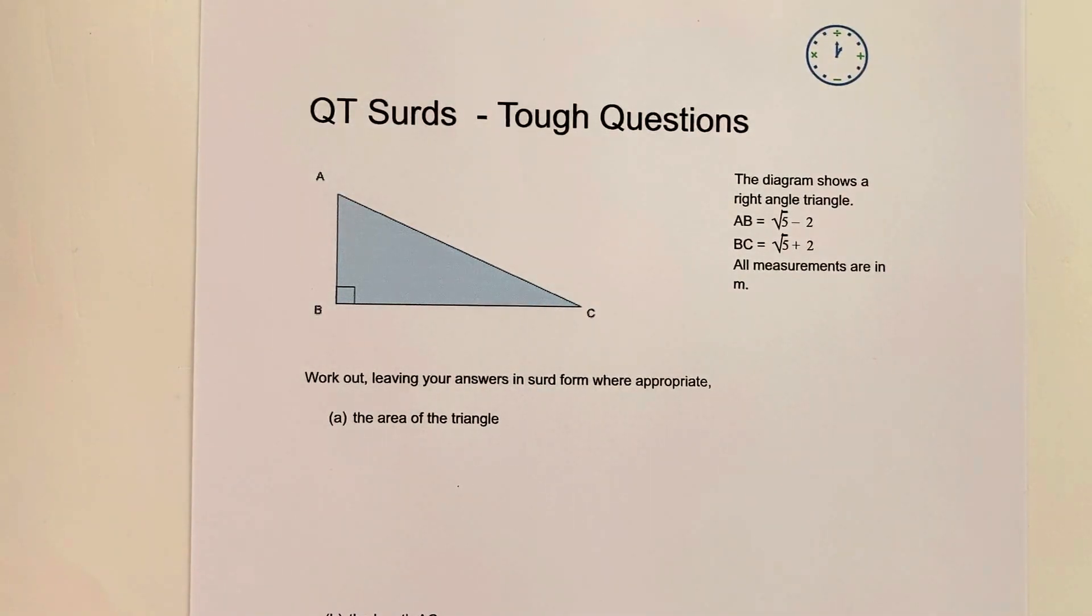You can follow the link in the description to download this worksheet on surds. We're going to look at the area of this triangle and in part B the length of AC. Let's start with part A, the area of the triangle.